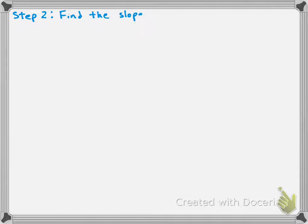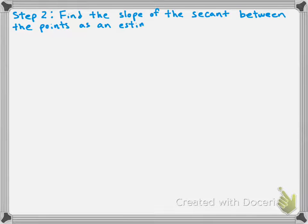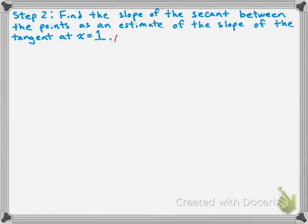On to step two: find the slope of the secant between the points as an estimate of the slope of the tangent at x = 1. The idea is that these points are so close that it's almost like finding the slope of the tangent at x = 1, even though we're using two distinct points to do it. We're going to calculate the slope of the secant between them, and it's going to be very similar to the slope of the tangent.